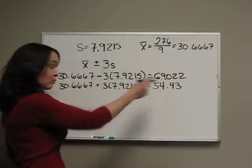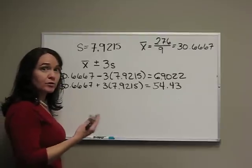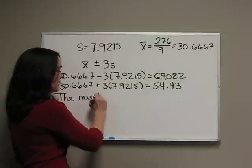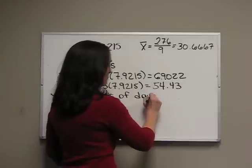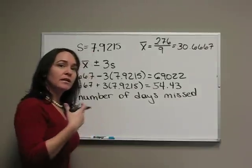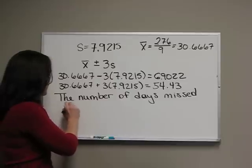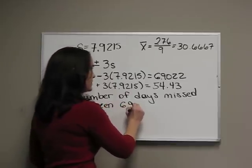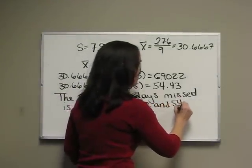Let's write out our interpretation. Remember, we were talking about the number of days workers missed, so we have to put that as part of our interpretation. We always interpret in context of our problem. So, the number of days missed is between 6.9022 and 54.43.